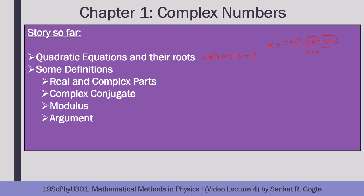These roots are important for complex numbers because when the term inside the square root — b² − 4ac — is less than zero, we have to use complex numbers to write down the roots. We also saw that if A, B, C are real coefficients, then the roots are either real or, if complex, they are complex conjugates of each other.